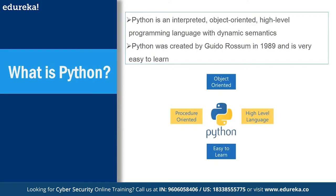Python was created by Guido van Rossum around 1989 and has been in use for about 30 years. For the last five-odd years it has grown dramatically, especially because of AI. It is object-oriented, procedure-oriented, high-level, and very easy to learn — you can write Hello World in just one single line, compared to Java or C++ which takes three to five lines.